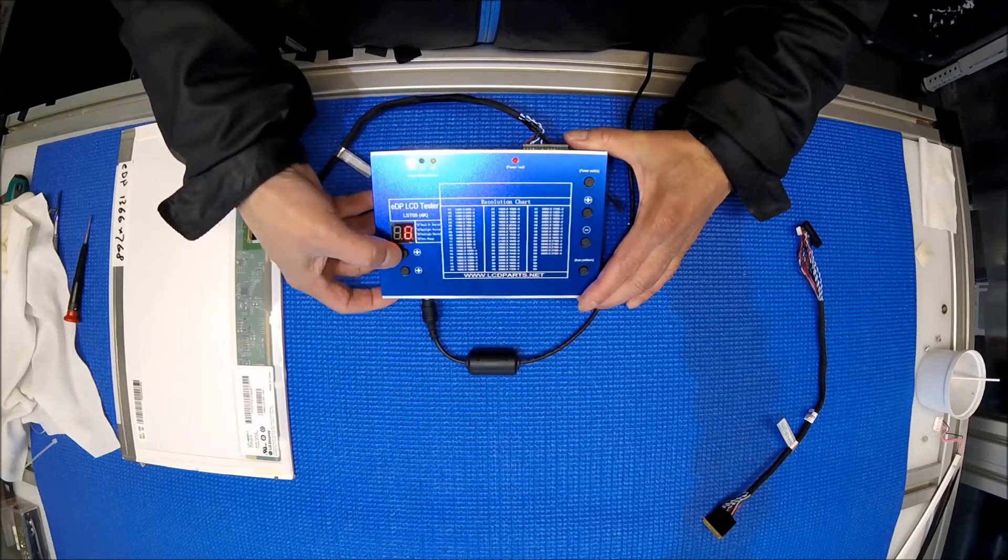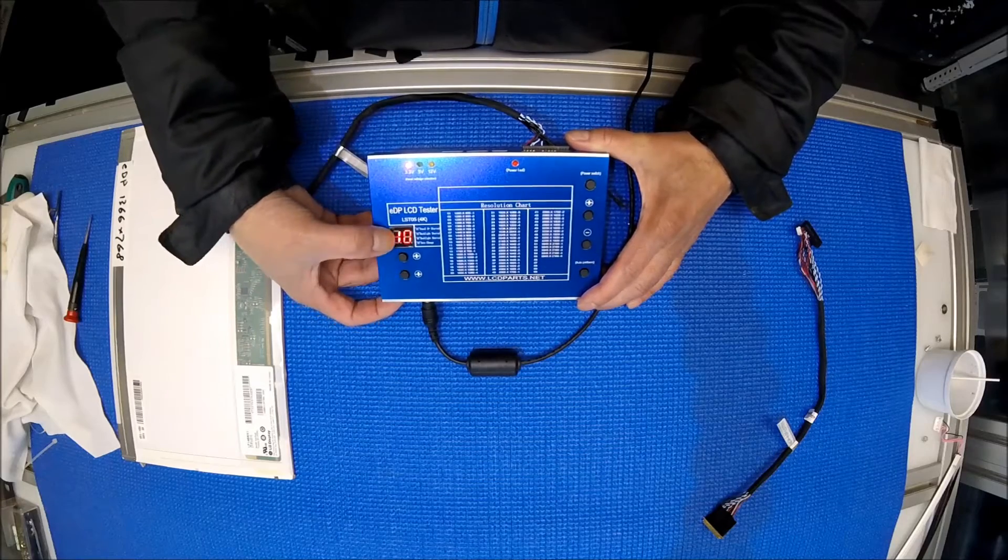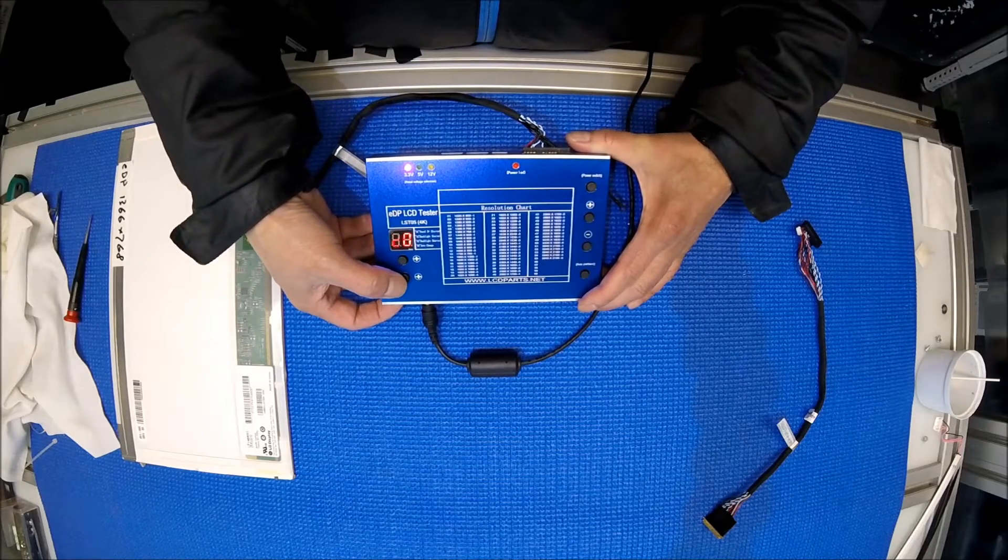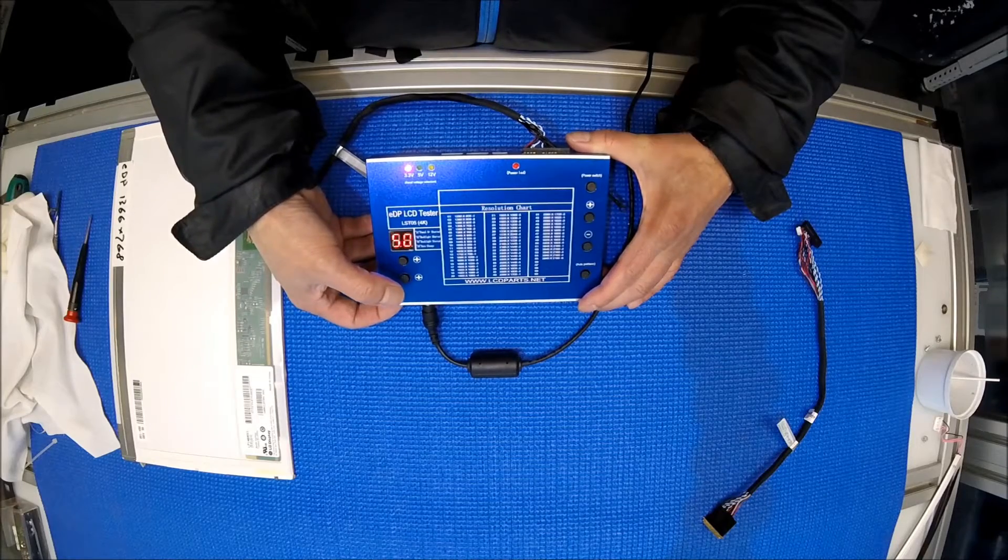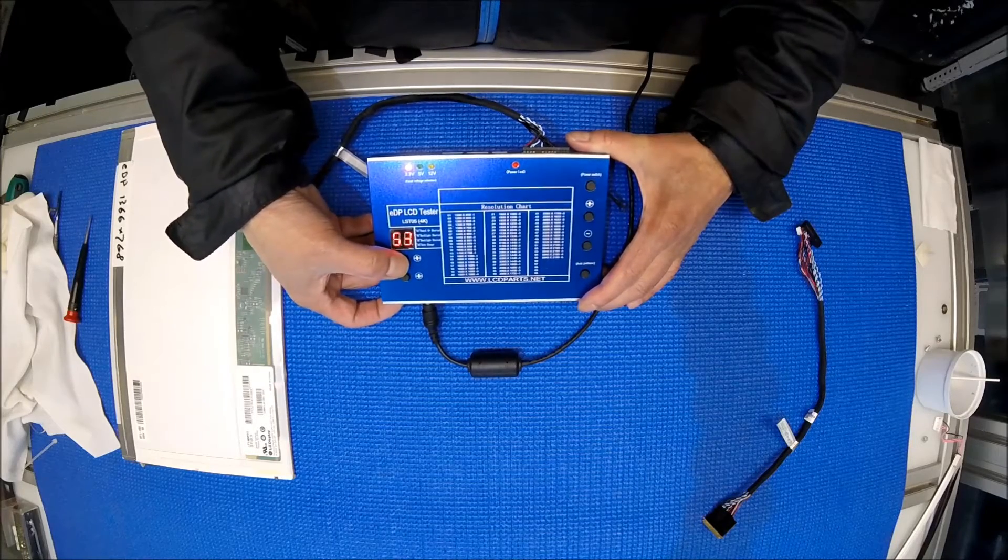But if you want to test mode 55, then this one's 10 digits at a time. See that? 1, 10, right? 2, 20, 3, 30, 40, 50. And then you can change it like this to 55.